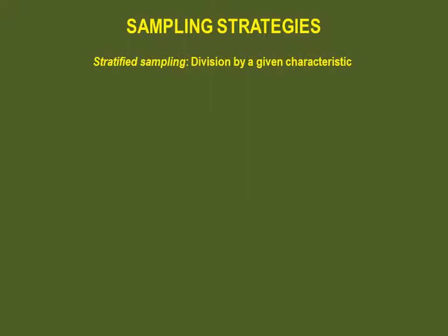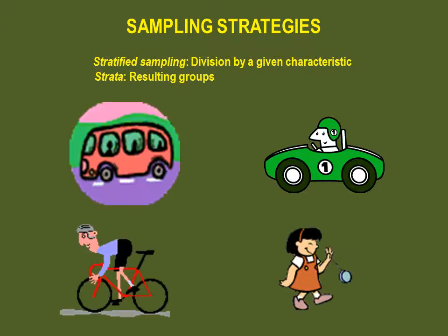The third strategy is the stratified sampling strategy. You can divide your population by a given characteristic you wish to study — the resulting groups are called strata. For example, if you'd like to determine travel time of students within the university, it would make sense to divide the students by their modes of transport. By doing this, you are dividing your subjects into different strata, different groups, and then you would choose samples within these groups.